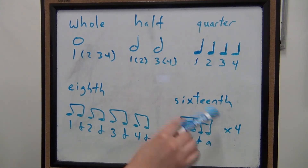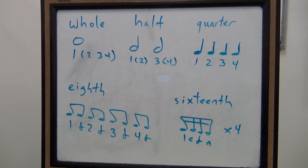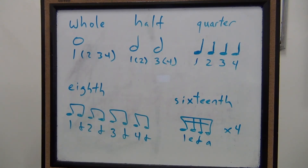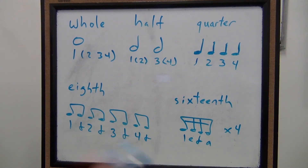Now this last one — at first you might not be able to play it, but learning to count it and feel it is still really important, and eventually your lips will get strong enough and fast enough where you can play it pretty easily. So we want to think one e and a, two e and a, three e and a, four e and a — because I'm too lazy to write it out four times. One e and a, two e and a, three e and a, four e and a, one.